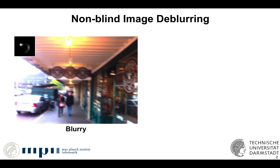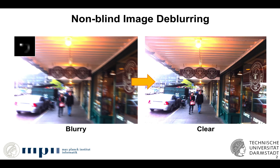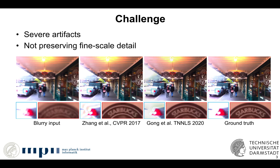Assuming we have a blurry photo with its blur kernel, the goal of non-blind image de-blurring is to recover the corresponding clear image. In challenging scenes, the results from prior work can exhibit severe artifacts or lack fine-scale detail.